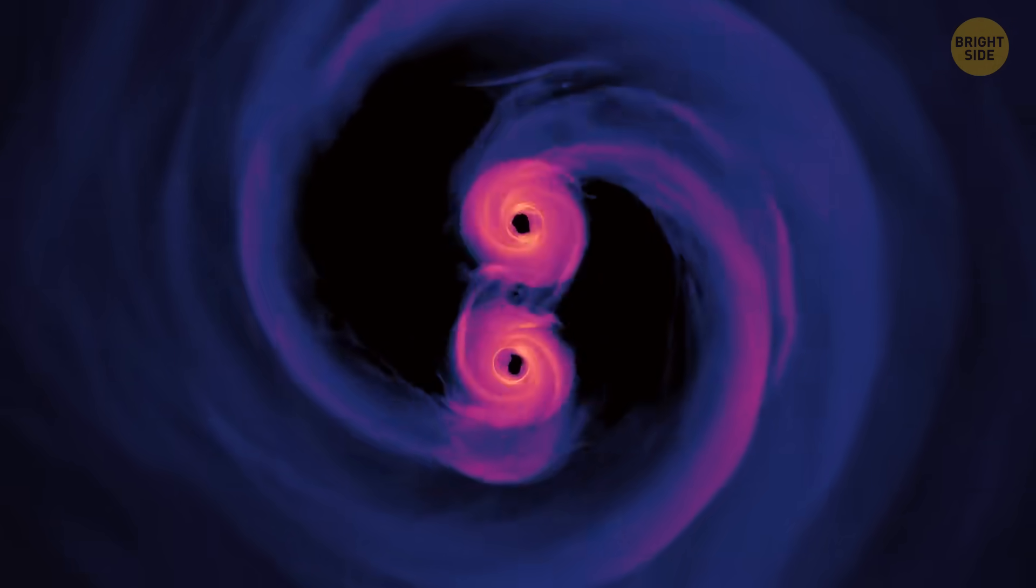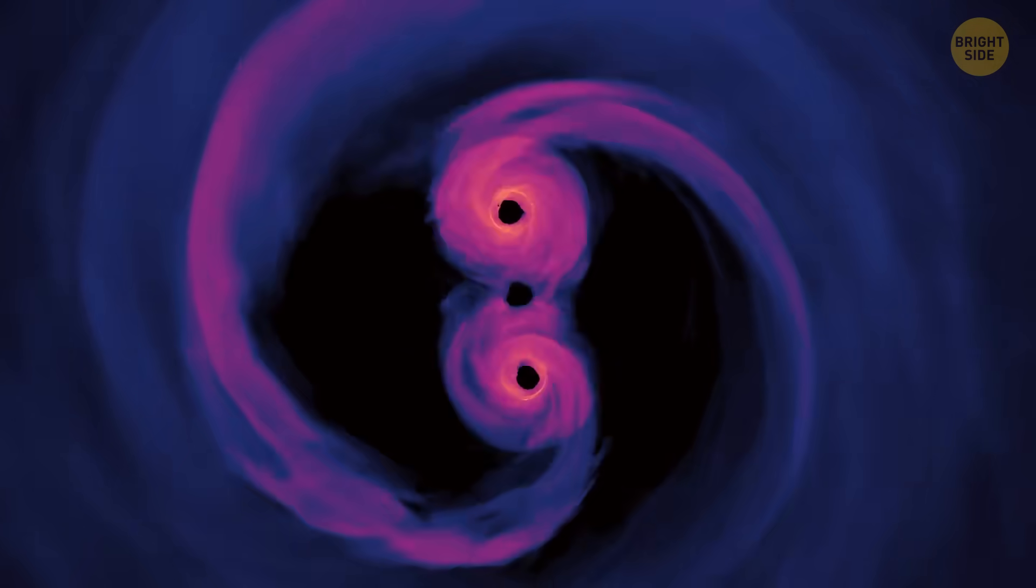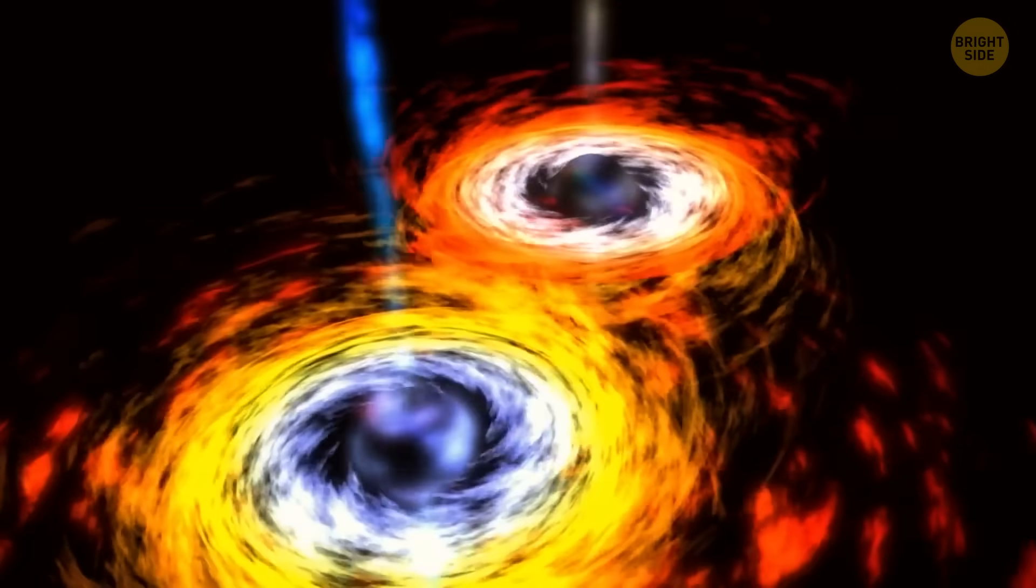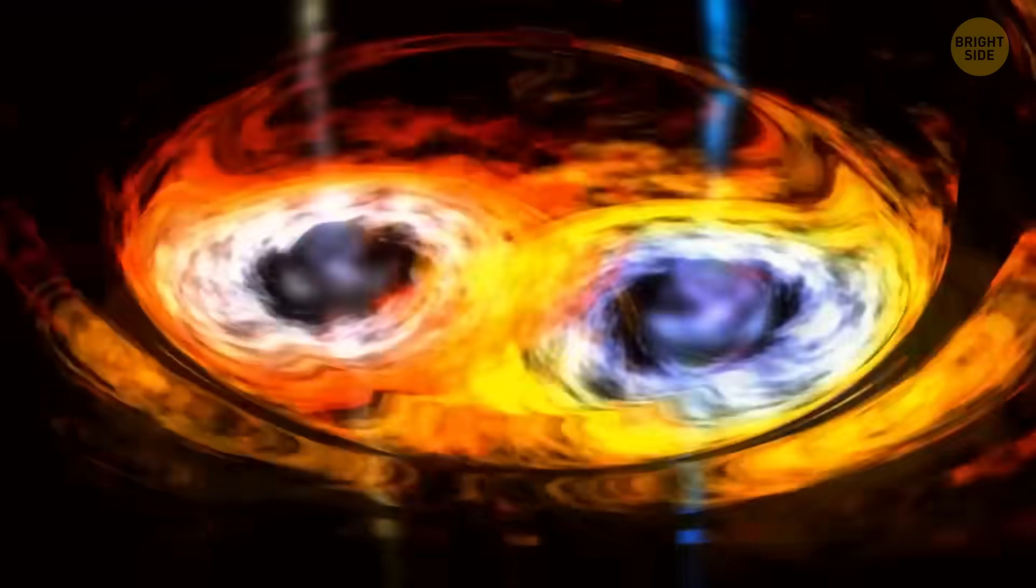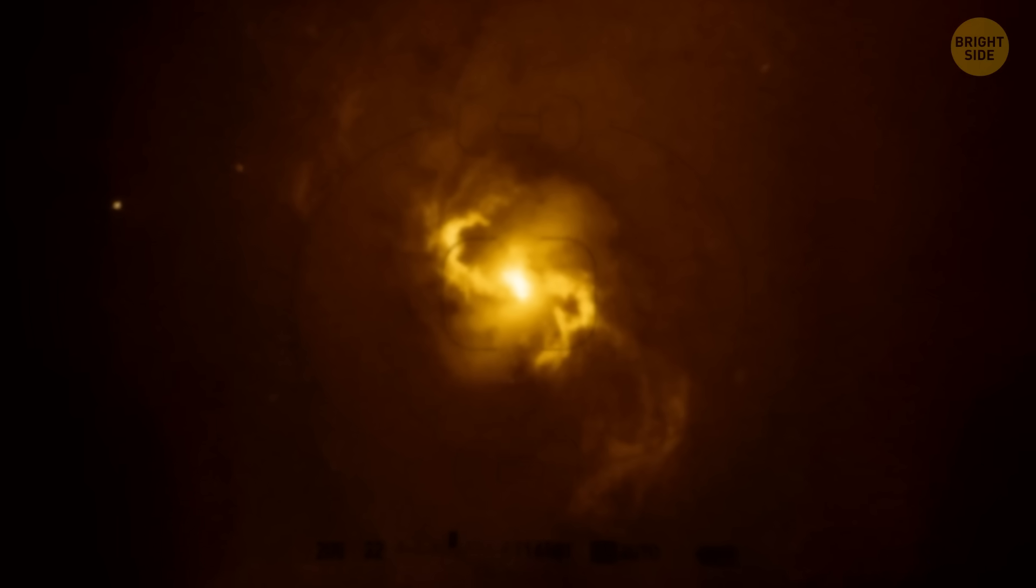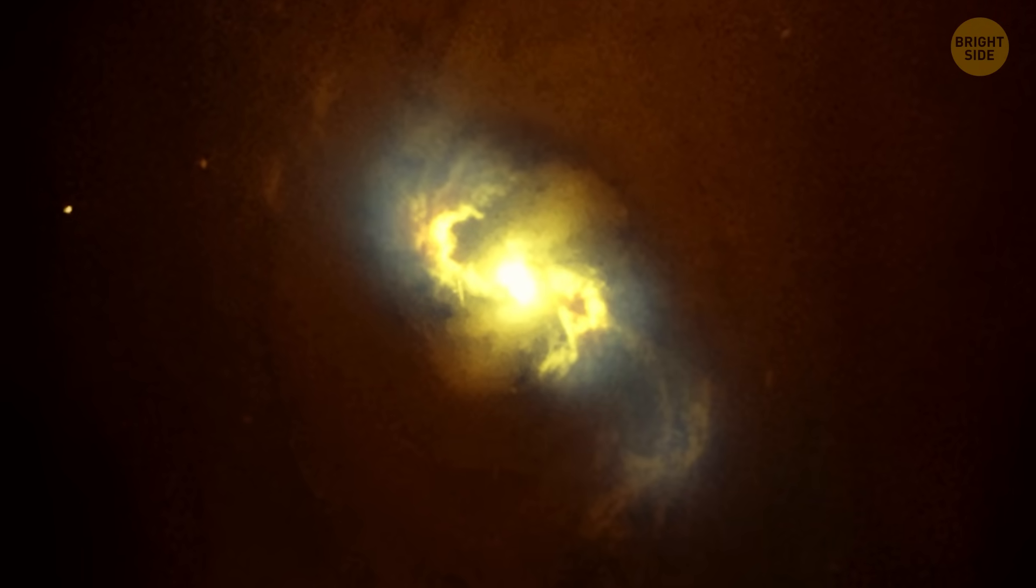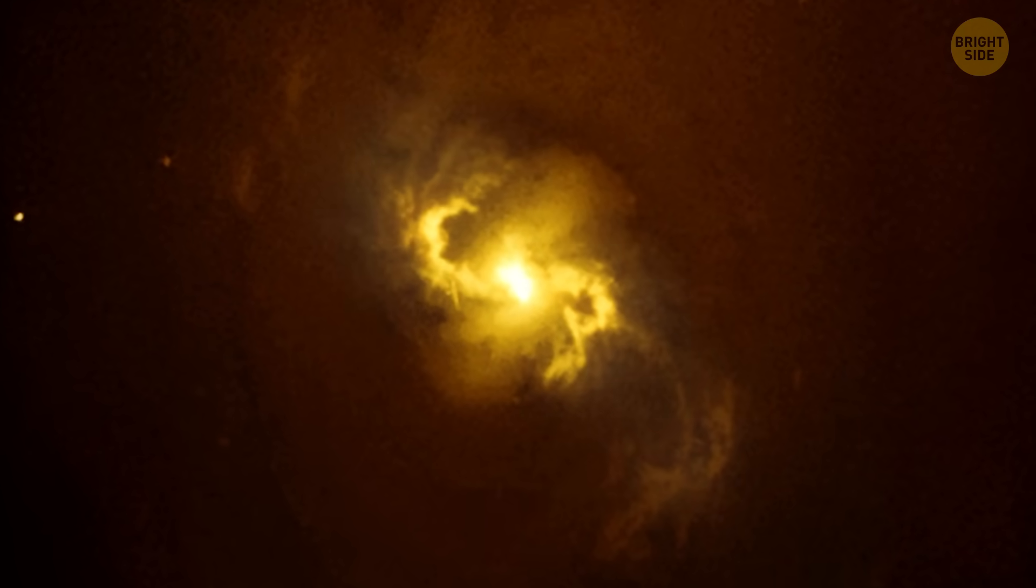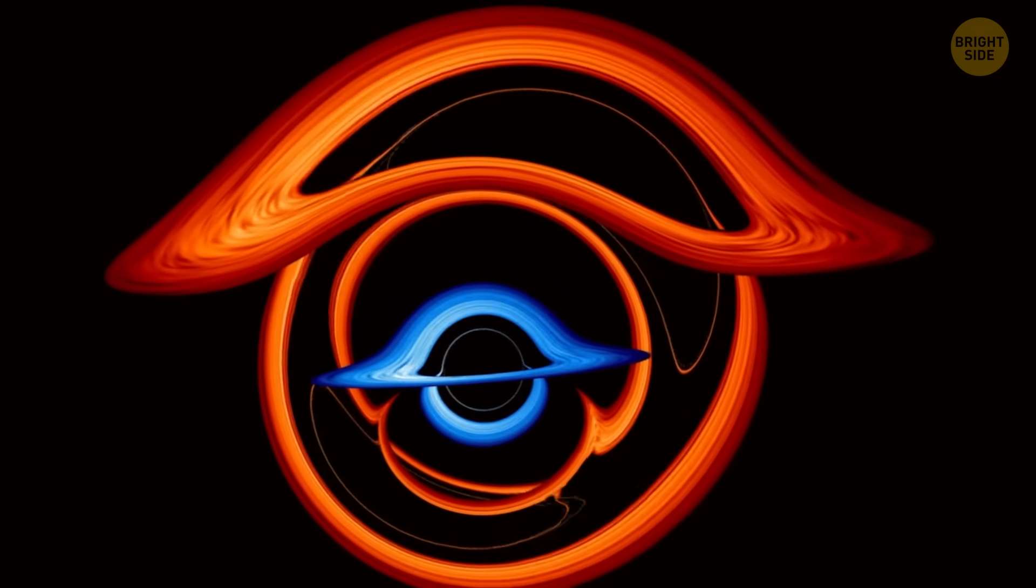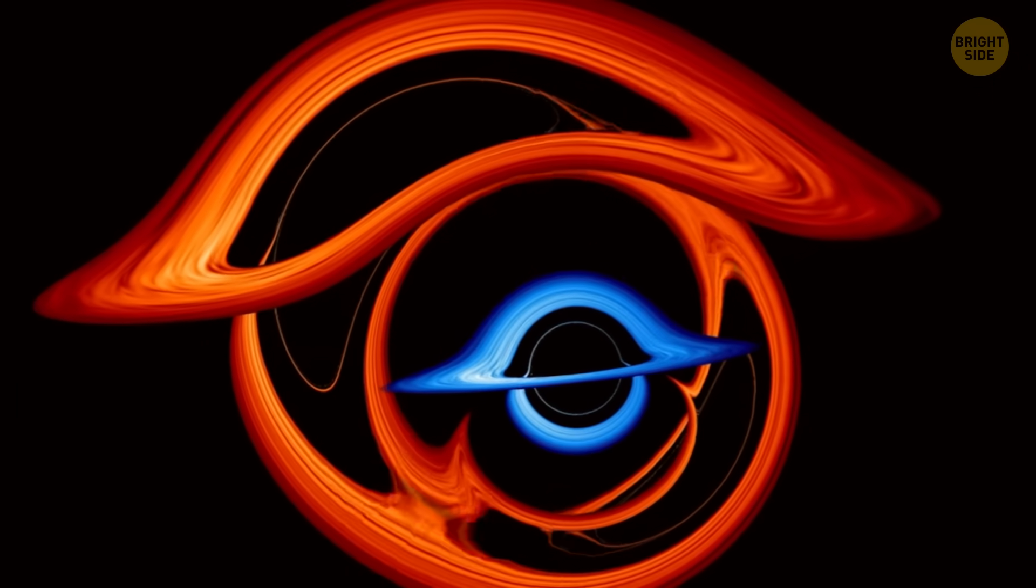There are also black holes that feed on their own kind. Black holes are known for devouring anything that gets too close. And this anything can include not only stars and gas, but also other black holes. Scientists witnessed a ginormous black hole at the heart of one galaxy being swallowed by an even larger black hole in another galaxy. It was the first time we detected such an event.